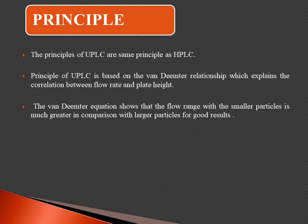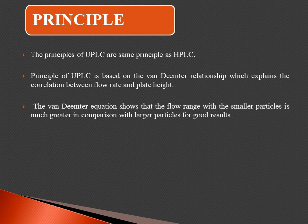In UPLC, the internal diameter of the column is reduced, and the pumping system has increased efficiency. The diameter of the stationary phase silica gel is reduced compared to HPLC — the particle diameter is reduced to 0.5 to 2 micrometers. The internal diameter of the column is also reduced. These are the key changes between HPLC and UPLC.